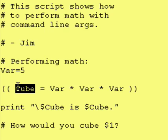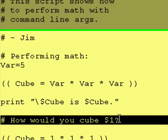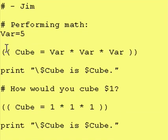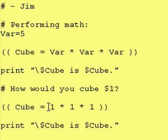Now, if inside of these parentheses you normally don't put the dollar sign in front of the variable name, how would you cube dollar sign 1? Well, using this model you would have to say cube equals 1 times 1 times 1 in the double parentheses.